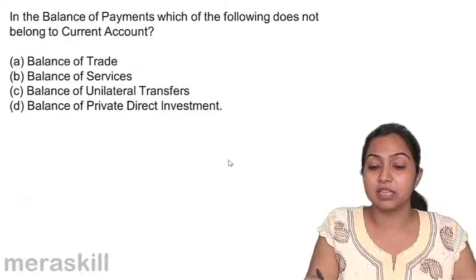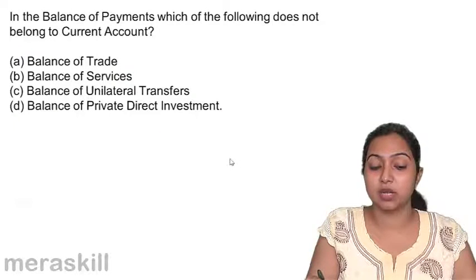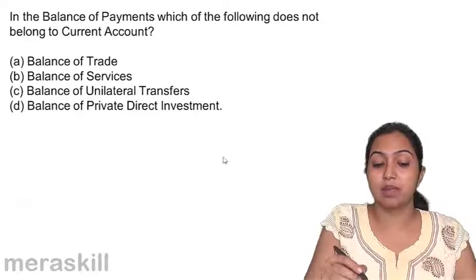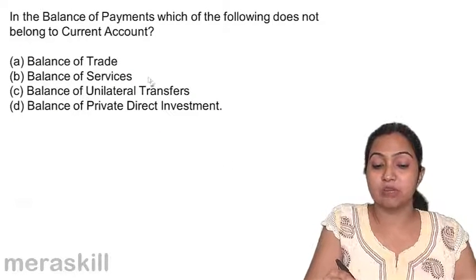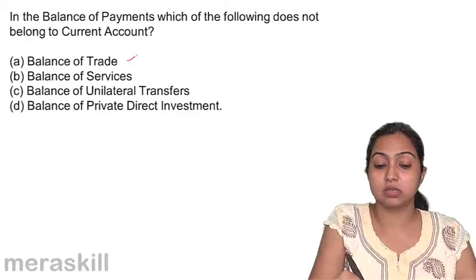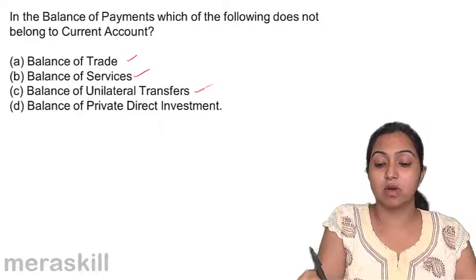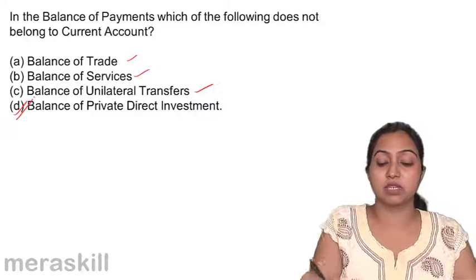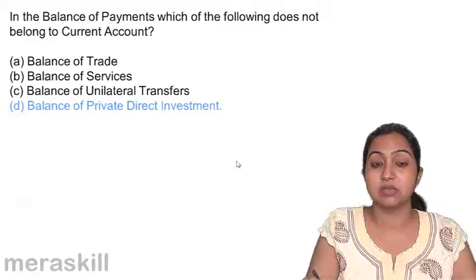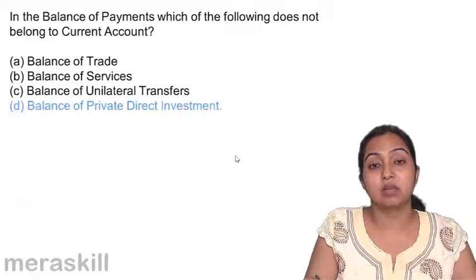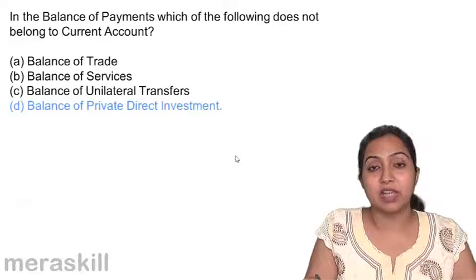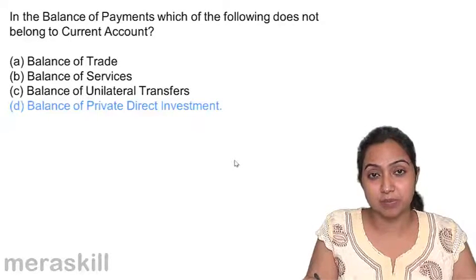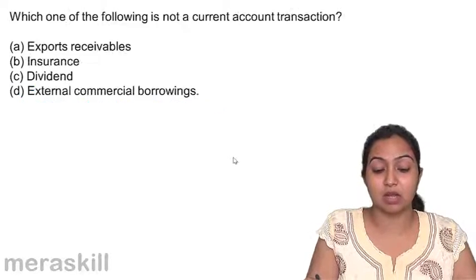In the balance of payments, which of the following does not belong to the current account? Balance of trade belongs, and so do other current items — but direct investment does not belong. Both private and government direct investment comes under the capital account.